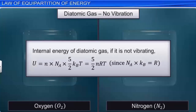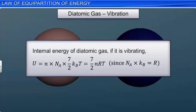The internal energy of n moles of a diatomic gas, if it is not vibrating, is U = n·NA·(5/2)k_B·T. Since NA·k_B = R, we get U = (5/2)nRT. The internal energy of n moles of a diatomic gas if it is vibrating is U = n·NA·(7/2)k_B·T, giving U = (7/2)nRT.